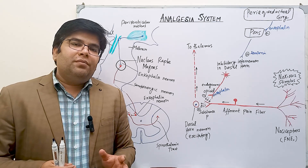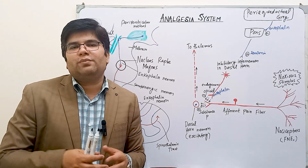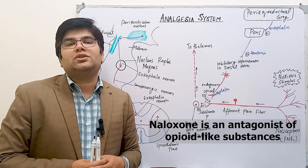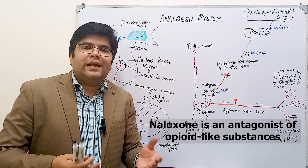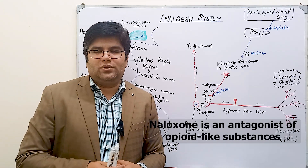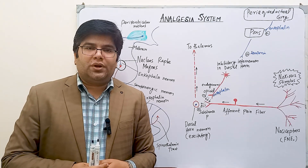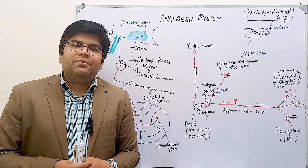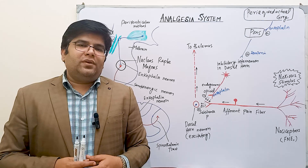Analgesia can be produced not only by endogenous opiate-like substances but also by some non-opiate substances. To determine whether analgesia is produced by opiates or non-opiates, we use an antagonist substance called naloxone. Naloxone antagonizes the action of natural opiates by blocking their receptors, thus revealing whether the analgesia is opiate-mediated or not. Some non-opiate molecules that can produce analgesia are serotonin, epinephrine, and norepinephrine.